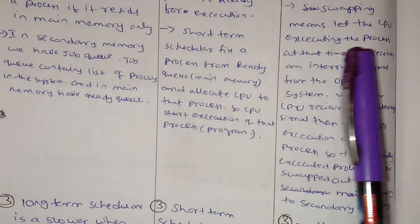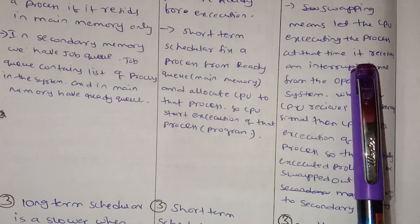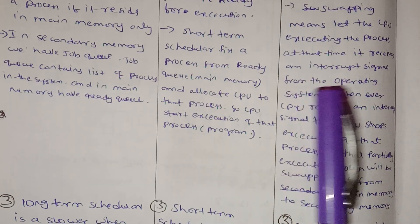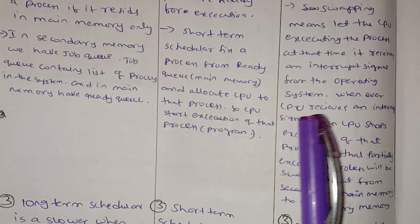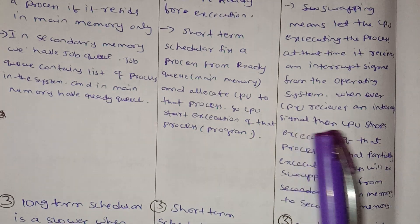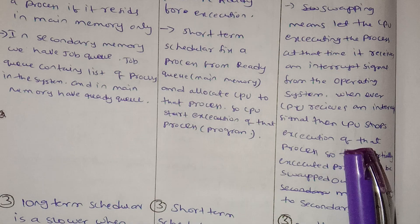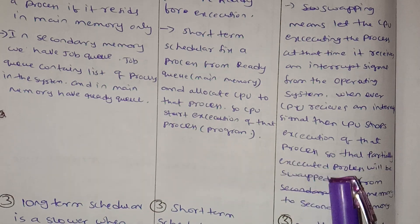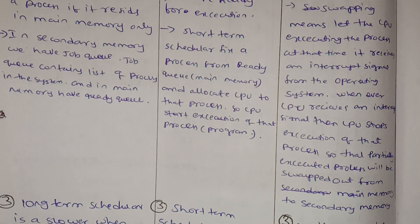Swapping means: when the CPU is executing a process and it receives an interrupt signal from the operating system, the CPU stops the execution of that process. The partially executed process will then be swapped out from Main Memory to Secondary Memory.